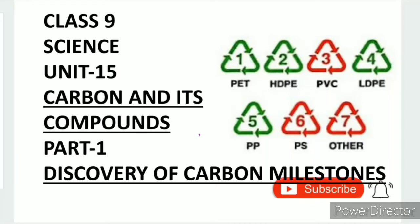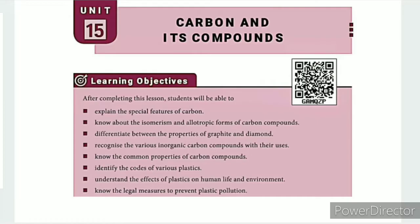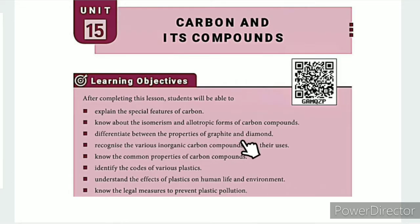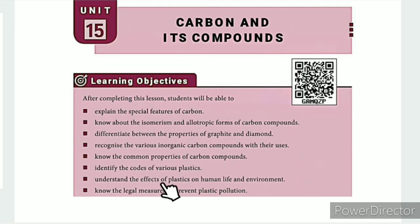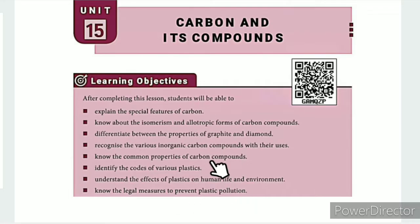Greetings from SS class 9 science unit 15, carbon and its compounds part 1, discovery of carbon milestones. The learning objectives are: explain the special features of carbon; know about isomerism and allotropic forms of carbon compounds; differentiate between properties of graphite and diamond; recognize various inorganic carbon compounds with their uses; know common properties of carbon compounds; identify the codes of various plastics; understand the effects of plastics on human life and environment; know the legal measures to prevent plastic pollution.